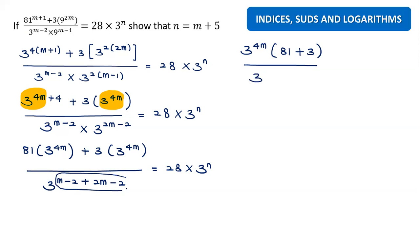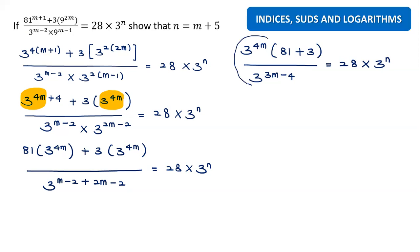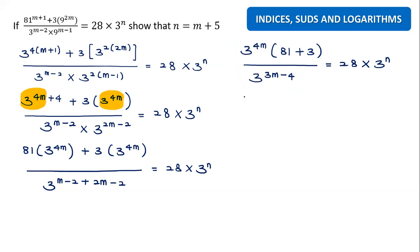So inside the bracket, 81 plus 3 can be solved. We also have the exponent on the bottom — m plus 2m gives 3m, minus 4. So we're going to approach the answer now. We can still combine those two terms because the base is the same, and dividing means we combine as a minus.